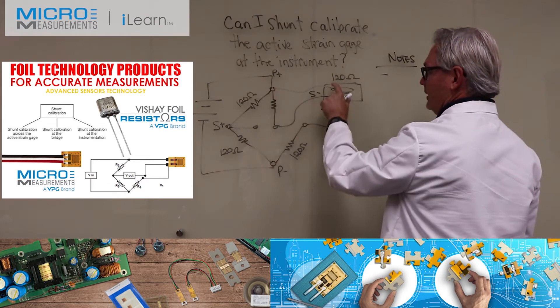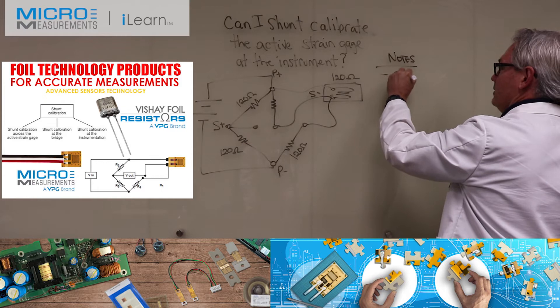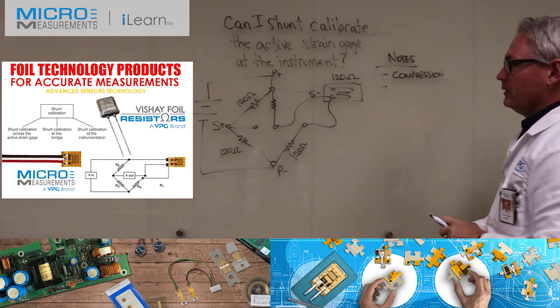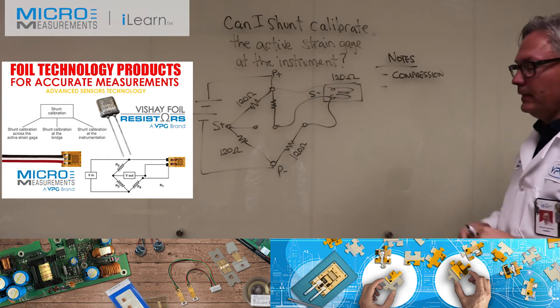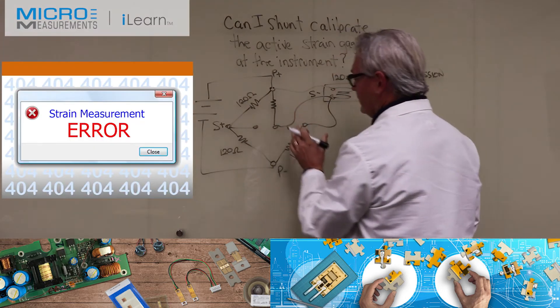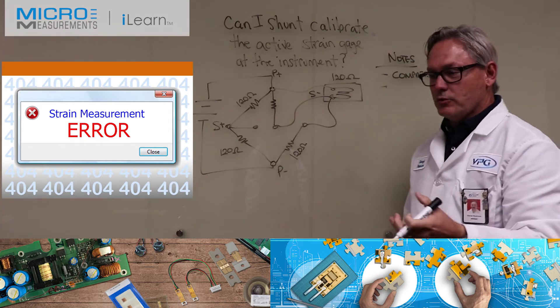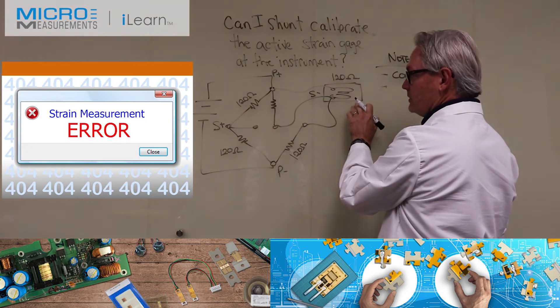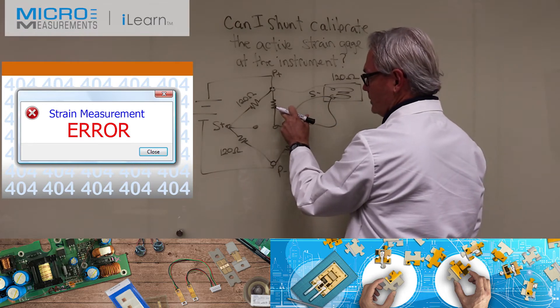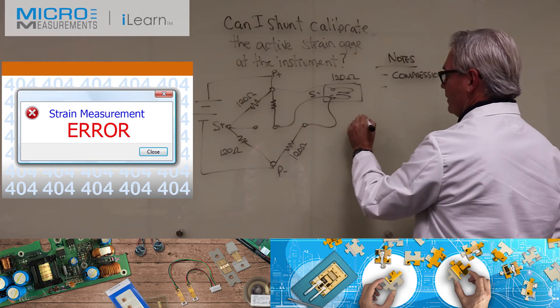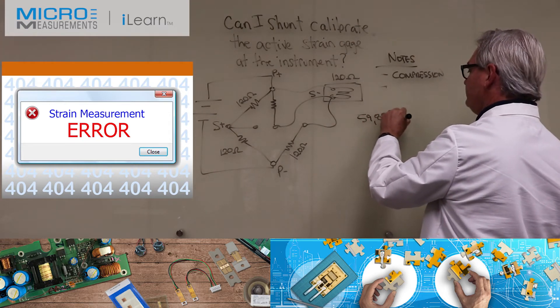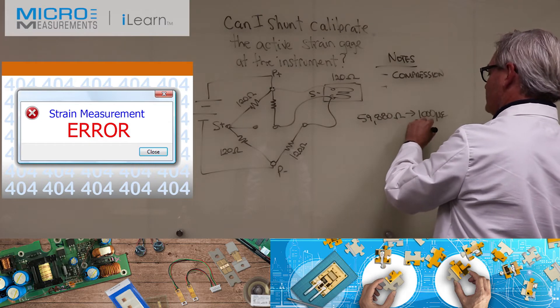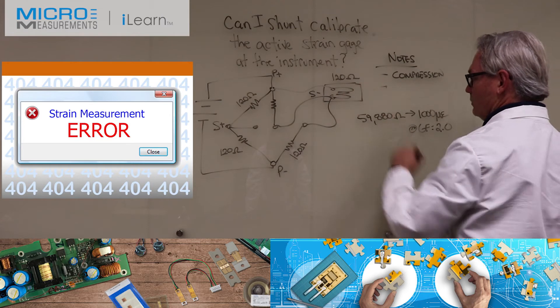First thing you should find is that since we're shunt calibrating the active gauge, causing that resistance to go down, it's going to simulate compression. However, there's an issue, and the magnitude of this problem is going to be a function of the resistor value of your strain gauge as well as what the calibration resistor is.